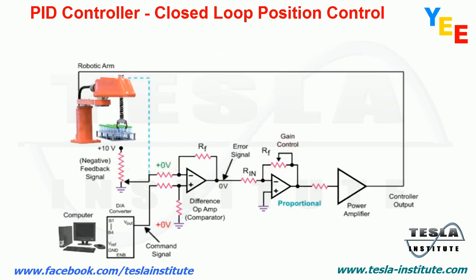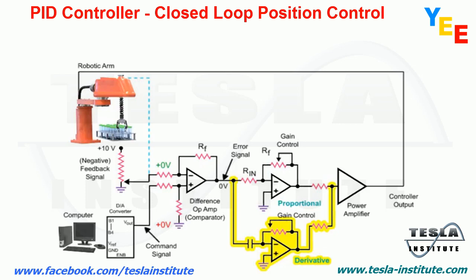To achieve a fast response time and minimize overshoot of the desired position, a derivative amplifier is added to the circuit.